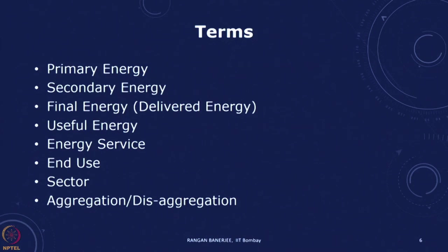We can also classify into different kinds of end uses: lighting, heating, cooling, cooking, transport — and then the sector. When we talk about sector, we are talking of residential, industrial, commercial. Whenever we want to get an idea of an energy system, we have to decide what is the level of aggregation and disaggregation. When I put things together, that is aggregation. When I separate them out, that is disaggregation.